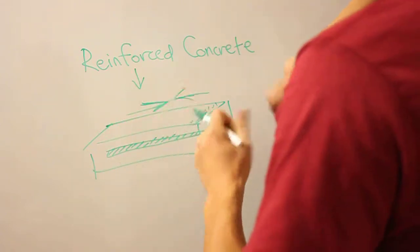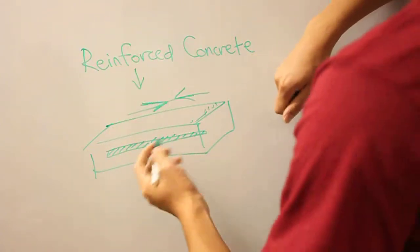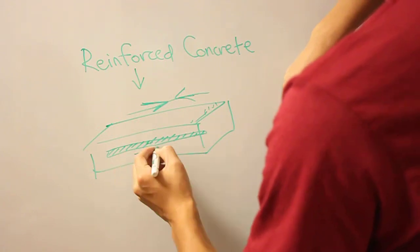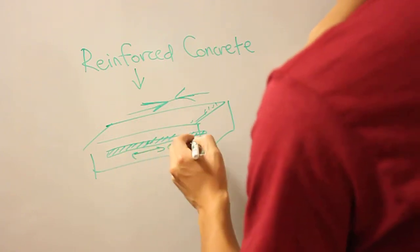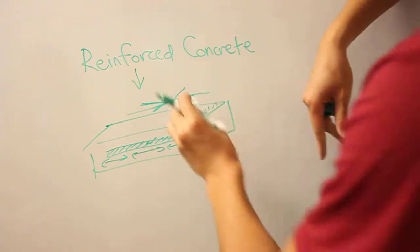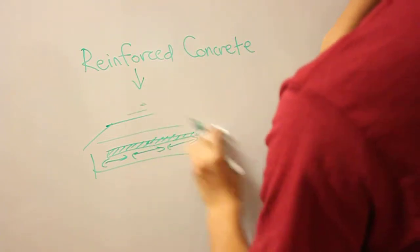But under tension, it's brittle and it will break easily. But that's where the steel bars within the material take up that tension and keep the concrete from breaking.